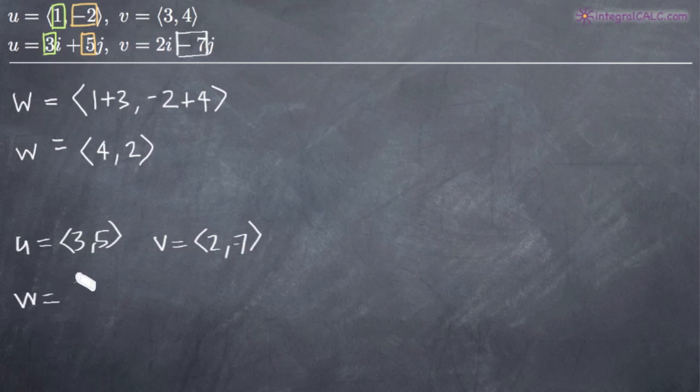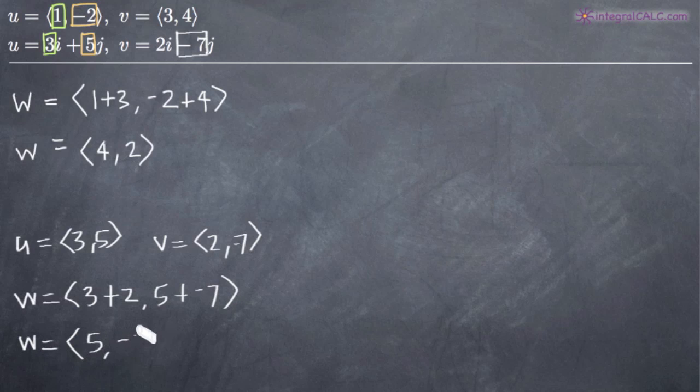So then when we get w, we'll have 3 plus 2 and 5 plus a negative 7. So of course, simplifying, we get 5 and negative 2.